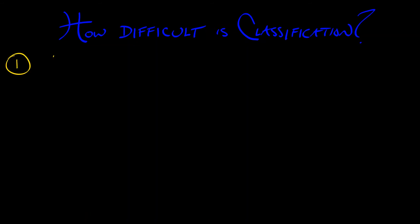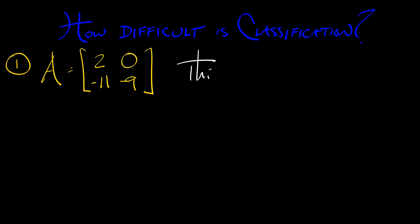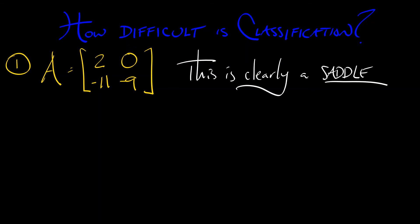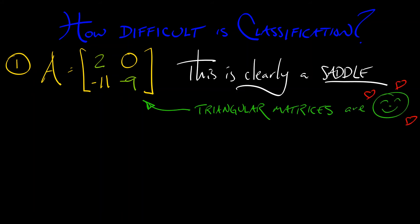Here's an example. Let's say we have the matrix A with entries 2, negative 11, 0, negative 9. This clearly gives you a saddle. This is a lower triangular matrix — and cool fact: whenever you have a triangular matrix, the eigenvalues are along the diagonal. The diagonal entries are the eigenvalues. You can do a little exercise and check that. Looking at it: one eigenvalue is 2, which is positive; the other is negative 9, which is negative. Boom — that's a saddle.